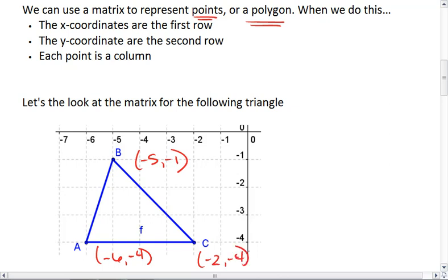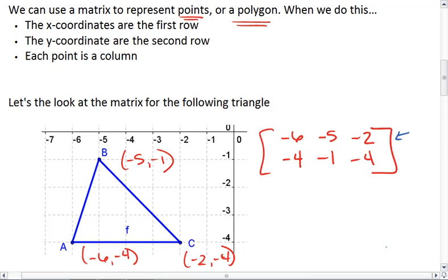To set up my matrix, I have 3 points, so I'm going to use 3 columns. I'll put A in the first column. We're going to just list its ordered pair of negative 6, negative 4. I'll put B in the next column, negative 5, negative 1, and then C, negative 2, negative 4. That's my matrix. So, in this matrix, I let the x-coordinates be the first row, the y-coordinates is the second row, and each point is a column.